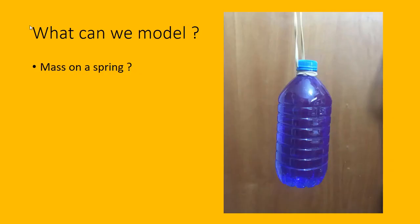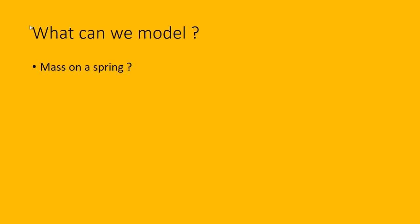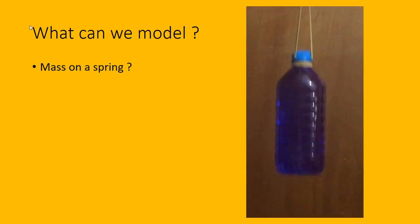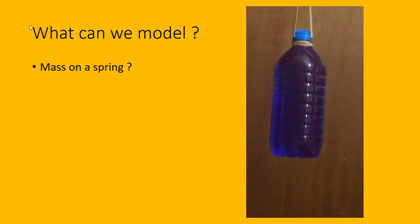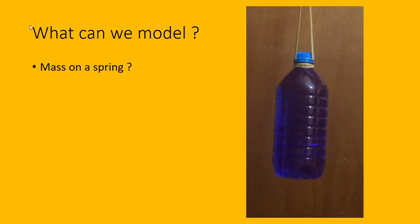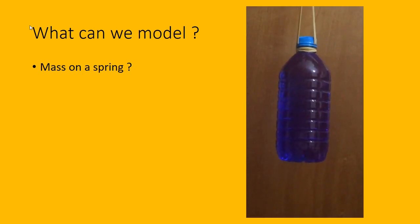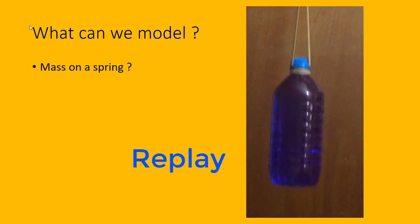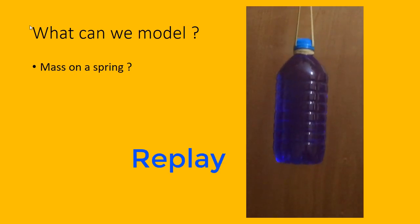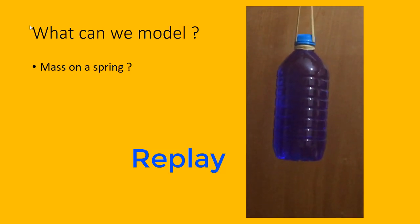So what can we model? Well, one thing we could perhaps model is a mass on a spring — perhaps an improvised spring such as the one here. Let's see what happens when this mass on the spring moves up and down. We can see our mass on the spring oscillating, and then, over time, the oscillations do seem to be decreasing — oscillations and then decaying oscillations.